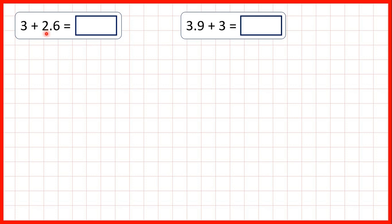In these questions we're adding a decimal number with tenths to a whole number. So we have 3 plus 2.6. We can write this out as a column addition, making sure we have our two ones from our decimal written underneath the three ones we have in our whole number.